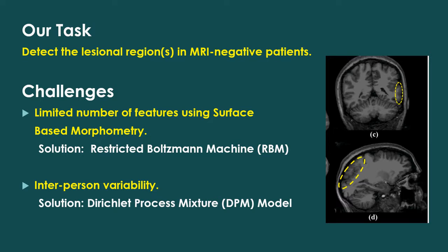We use surface-based morphometry to model a 3D MRI image. The associated challenges are the limited number of features and inter-person variabilities in the training data. We employ the Restricted Boltzmann Machine and Dirichlet process mixture model to address these two issues respectively.